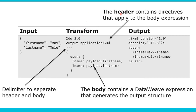In the transform activity, you will first see the header. The header contains directives that apply to the body expression. First, it will show you DW 2.0 — that is the latest version of DataWeave. Then comes output application/xml, which tells in which format you want to transform your input to. You just give application/xml and MuleSoft takes care of the transformation. After that come three dashes, which are delimiters to separate the header and body. Above the dashes is your header; below that, everything is your body, which contains the actual DataWeave expression generating the required output structure.